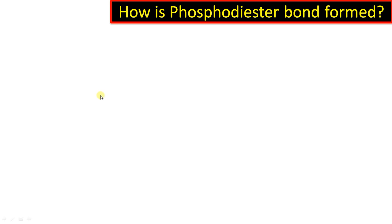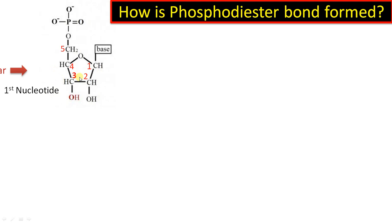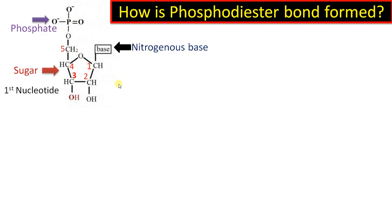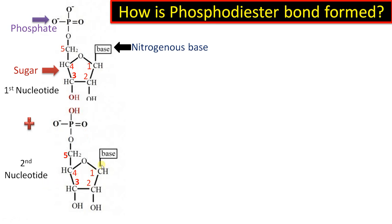Let's begin with a nucleotide. A nucleotide has a sugar, a phosphate, and a nitrogenous base — these three components make up a nucleotide. This is a second nucleotide, also having a sugar, a phosphate group, and a nitrogenous base. At the third position of the first nucleotide there is a hydroxyl group, whereas in the second nucleotide at the fifth carbon position there is a phosphate group with a hydroxyl group.